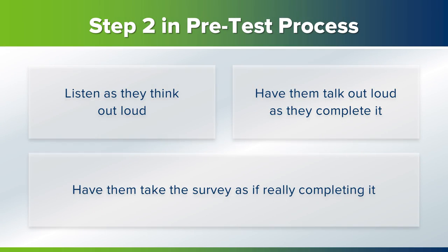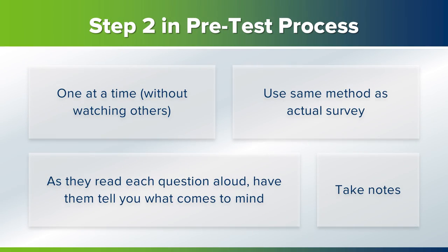Step two in the process is to have the person take the survey as if they're really completing it, and to talk out loud as they complete it so you can understand their thinking process. Ask the five people you chose to complete the survey while thinking out loud. Once you've found your testers, ask them to complete the survey one at a time — they shouldn't be able to watch each other complete it. The testers should complete the survey the same way it will be completed in the actual project. So if it's an online survey, they should complete it online.